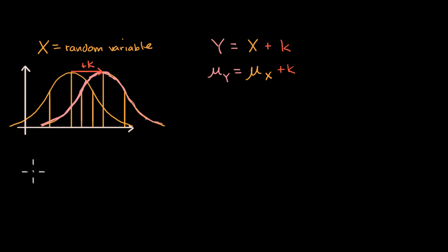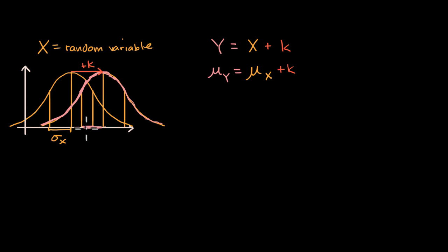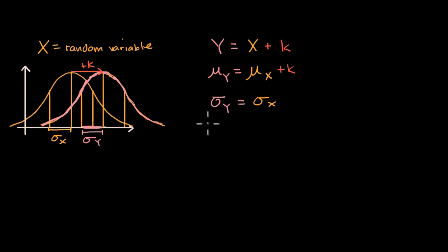But has the standard deviation changed? Well, remember, standard deviation is a way of measuring typical spread from the mean, and that won't change. For random variable x, this length right over here is one standard deviation. That's also going to be the same as one standard deviation for y. So we can say the standard deviation of y is equal to the standard deviation of x. If you just add a constant to a random variable, it changes the mean but not the standard deviation.